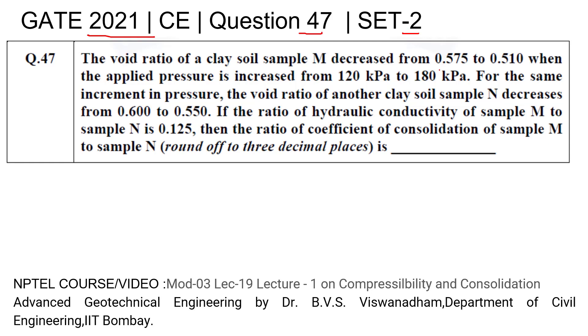decreased from 0.575 to 0.510 when applied pressure increased from 120 kPa to 180 kPa. For the same increment in pressure, the void ratio of another clay soil sample N decreases from 0.6 to 0.55.